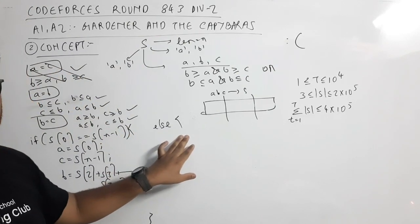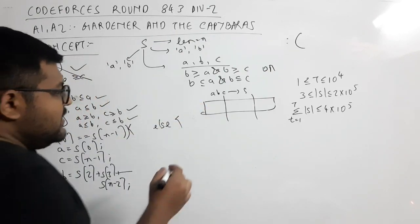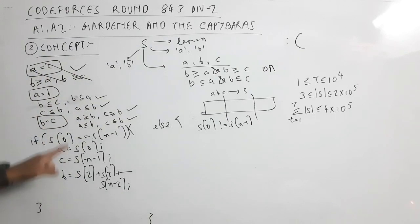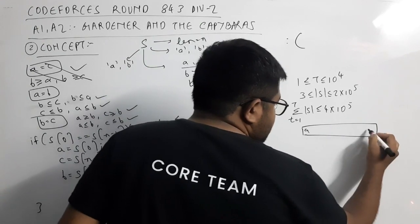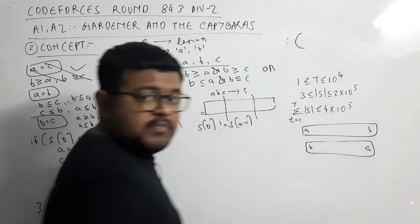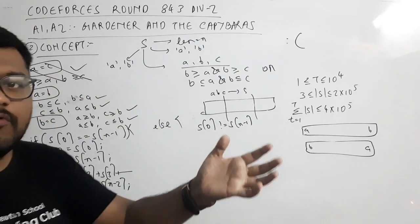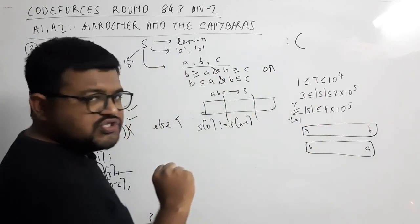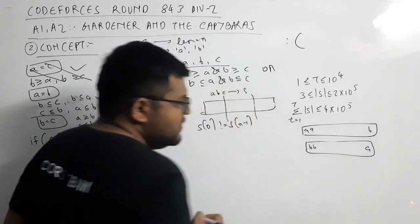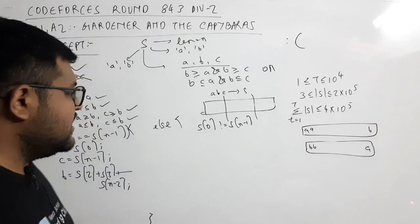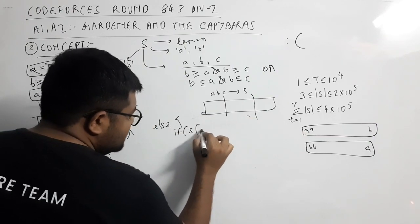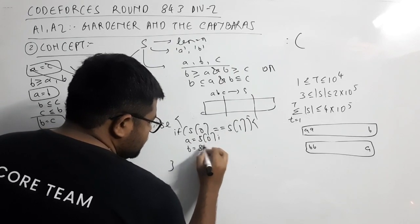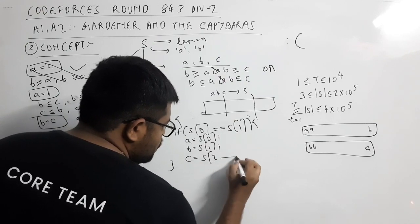If S[0] is not equal to S[n-1], consider instead whether S[0] equals S[1]. If the first and second characters are the same, I can set A = S[0], B = S[1], and C = S[2] to S[n-1]. This makes A equal to B.